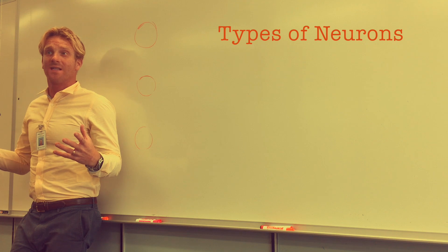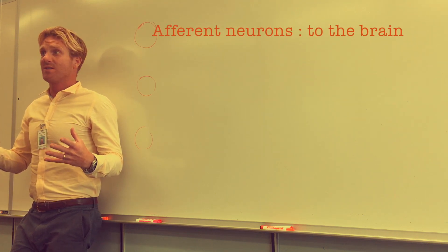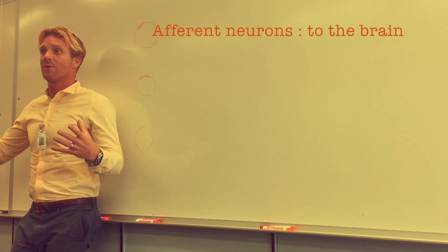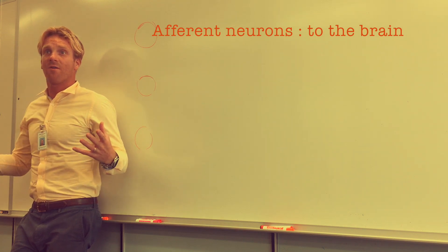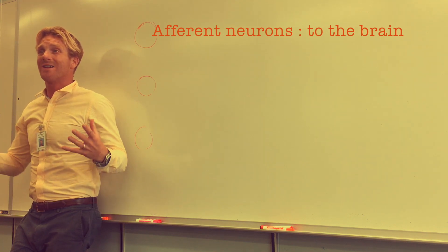We've got neurons that transfer information to the brain, those are called afferent neurons. So neurons that connect sensory receptors to the brain, those are afferent neurons, and then you have neurons that take information away from the brain, those are efferent neurons.